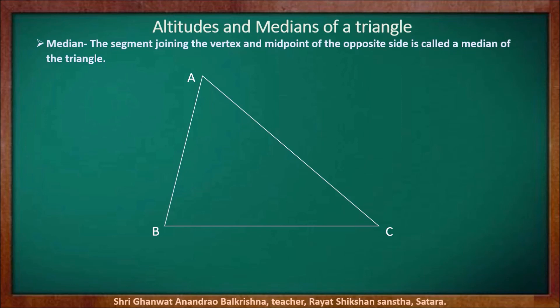Let us draw triangle ABC. Now we have to draw a median of triangle ABC. For that, we have to find the midpoint of segment BC. So for finding the midpoint, we have drawn here a perpendicular bisector of segment BC. The point of intersection of the perpendicular bisector and segment BC is point D, meaning D is the midpoint of segment BC. Now join vertex A and midpoint D — segment AD is the median of given triangle ABC.